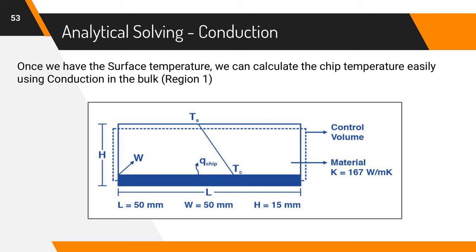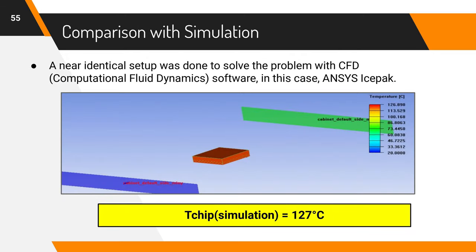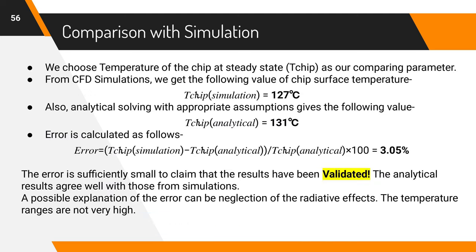Once we have the surface temperature and energy balance on this control volume will give us the chip temperature. We use Fourier's law with K equal to 167 Watt per meter Kelvin for aluminum 6061 alloy and get Tchip equal to 131 degrees Celsius. This is close to what we use for estimating heat modes and hence our entire analysis is valid. A near identical problem is solved by running a simulation using ANSYS IcePack to arrive at the chip temperature value of 127 degrees Celsius. So if we compare these results, we get a mere deviation of 3.05%. The temperature we got by our on-paper analysis is really close to the simulation level. We can therefore claim that all our results have been successfully validated. We can even reason this 3% difference by saying that neglecting radiation in analytical solving brought this difference.